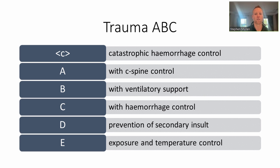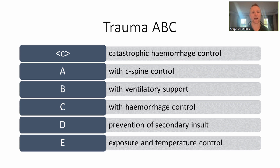There is some slight difference to our trauma ABC algorithm. Whenever we have catastrophic haemorrhage sitting at the top, this is simply put: if you don't stop the bleeding, you don't have an airway to fix. For every line we come across, we have an adjunct to consider. For airway, we're thinking early about C-spine control. For breathing, do we need ventilatory support? For circulation, stop the haemorrhage. For disability, prevent secondary insults to the brain and spinal cord. For exposure, look everywhere else and think about temperature, which is part of the lethal triad of trauma.